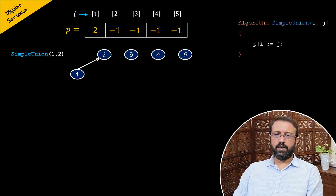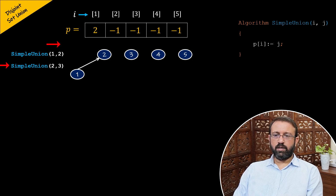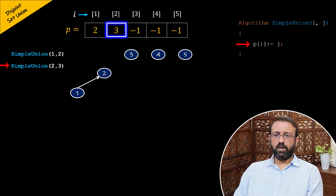Let us perform the second sequence of union operation using the simple union algorithm, passing two for parameter i and passing three for parameter j. The algorithm has the statement P of i assigned j, and here we have i as two and j as three. So P of two is assigned value three and three is stored in array P at index two. Therefore, node three becomes the parent of node two.